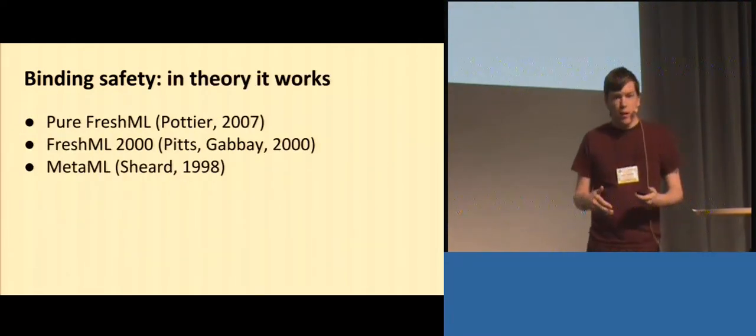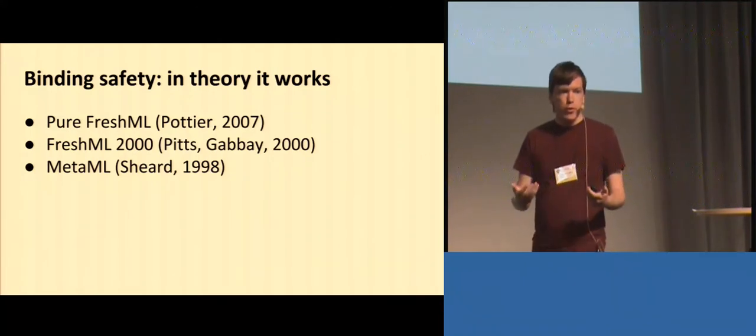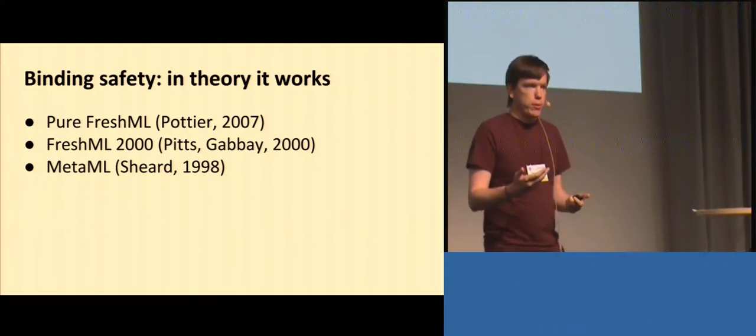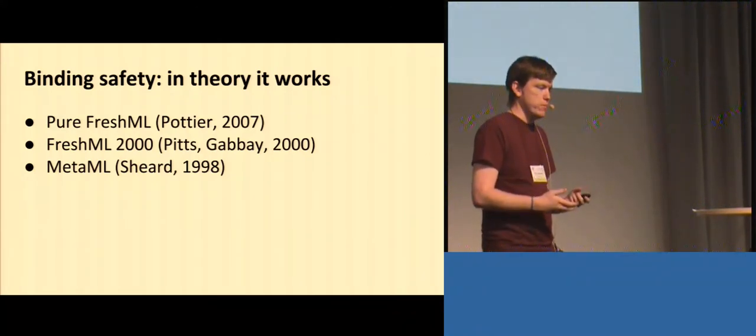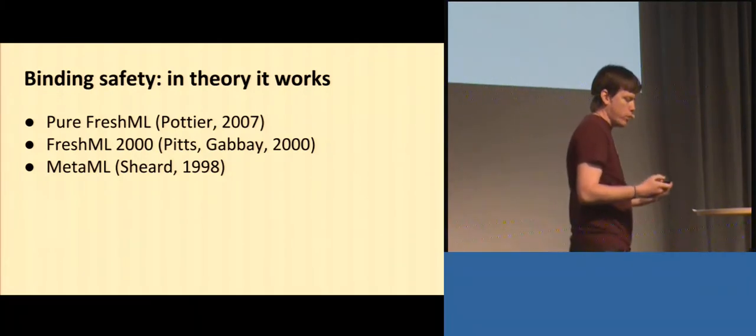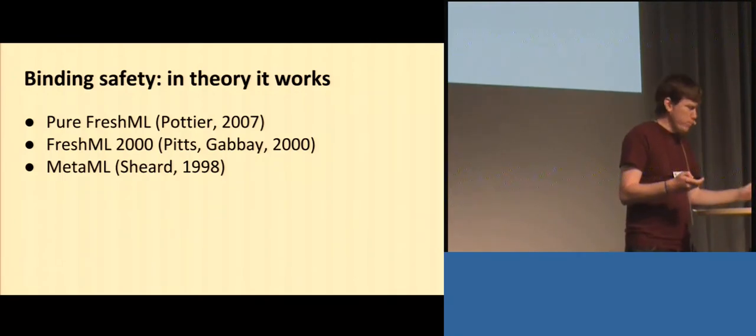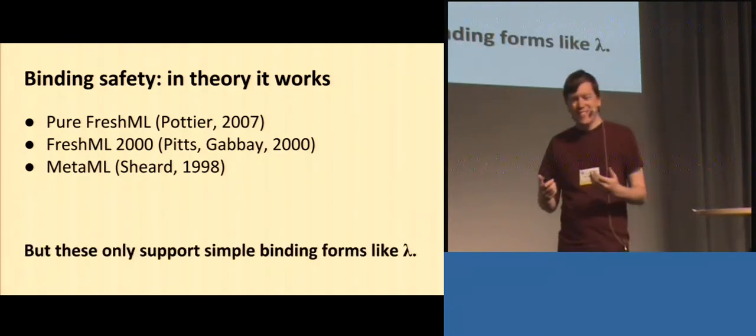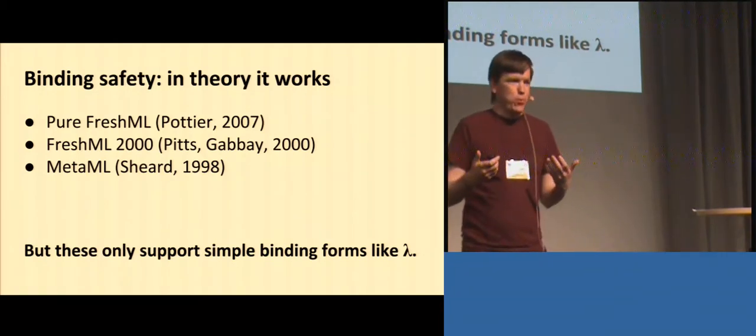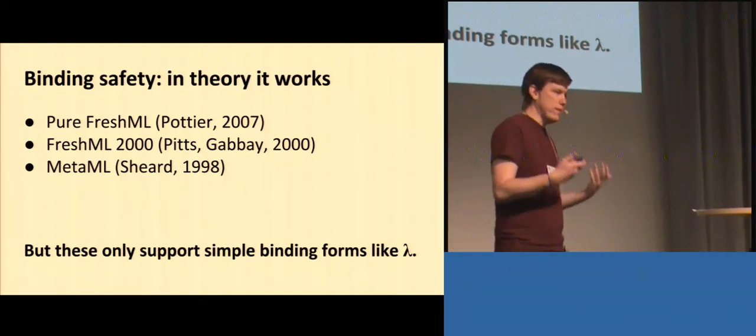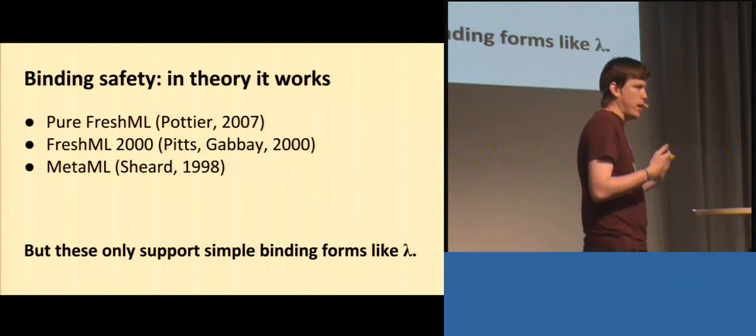This isn't a new idea. We're building our work off of pure, fresh ML, which also has this property, as do many of its predecessors. These things all preserve binding safety, and I should be happy, but I'm not. Because these languages only support simple binding forms like lambda, and left, and maybe slightly more complicated things.